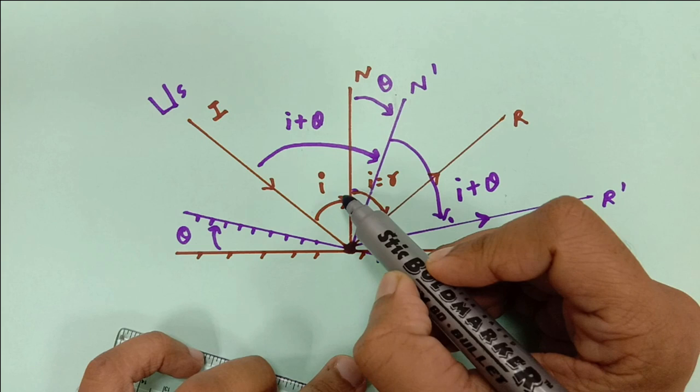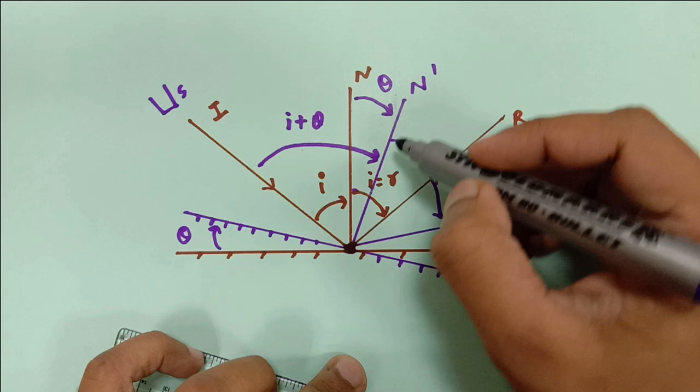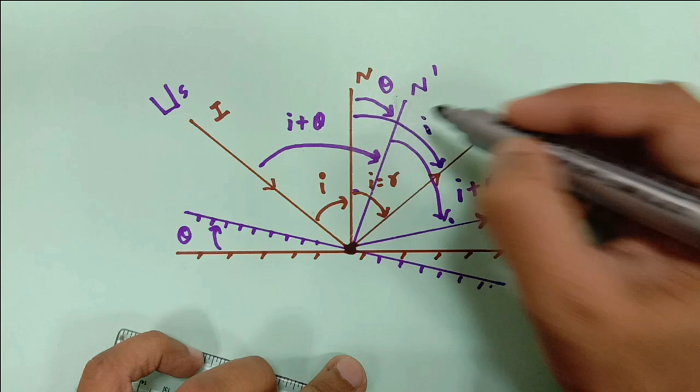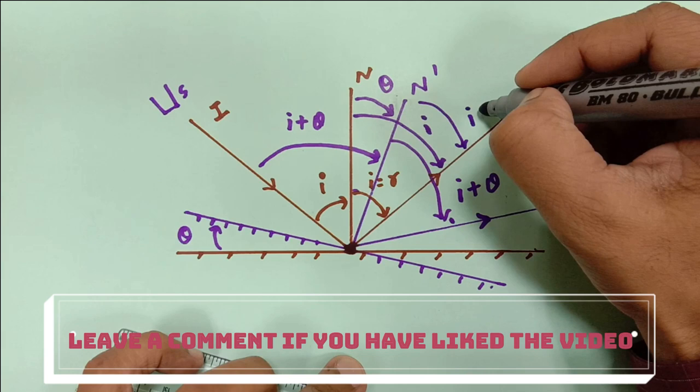Now, this angle is I — it is R, but I and R are the same. So this whole angle is I. This angle and this angle are the same, and this is theta, so this angle has to be...